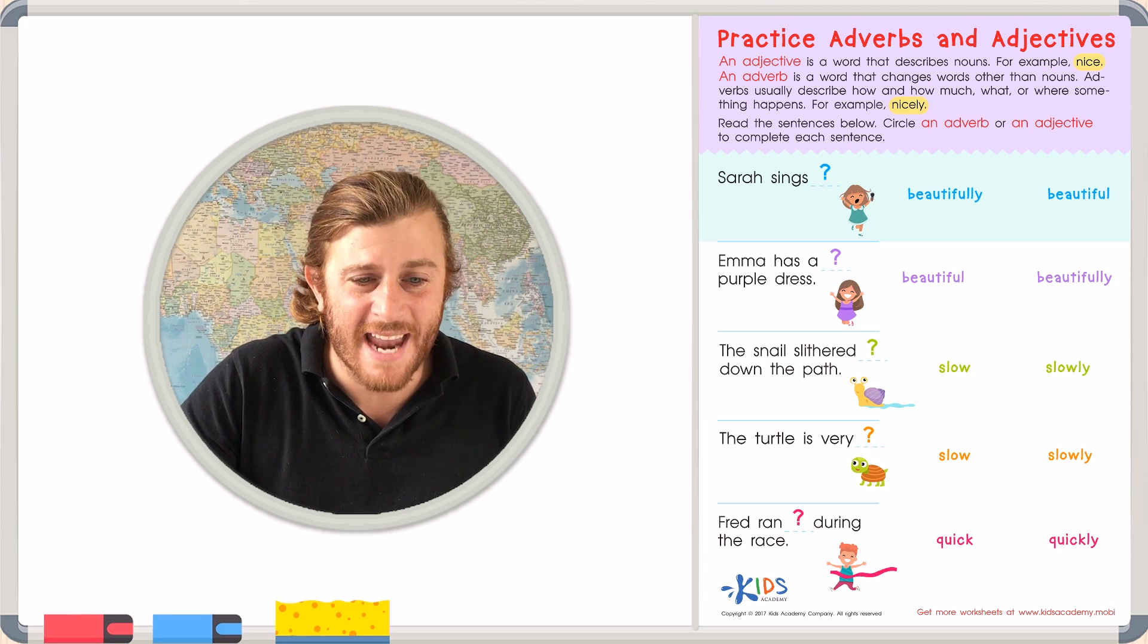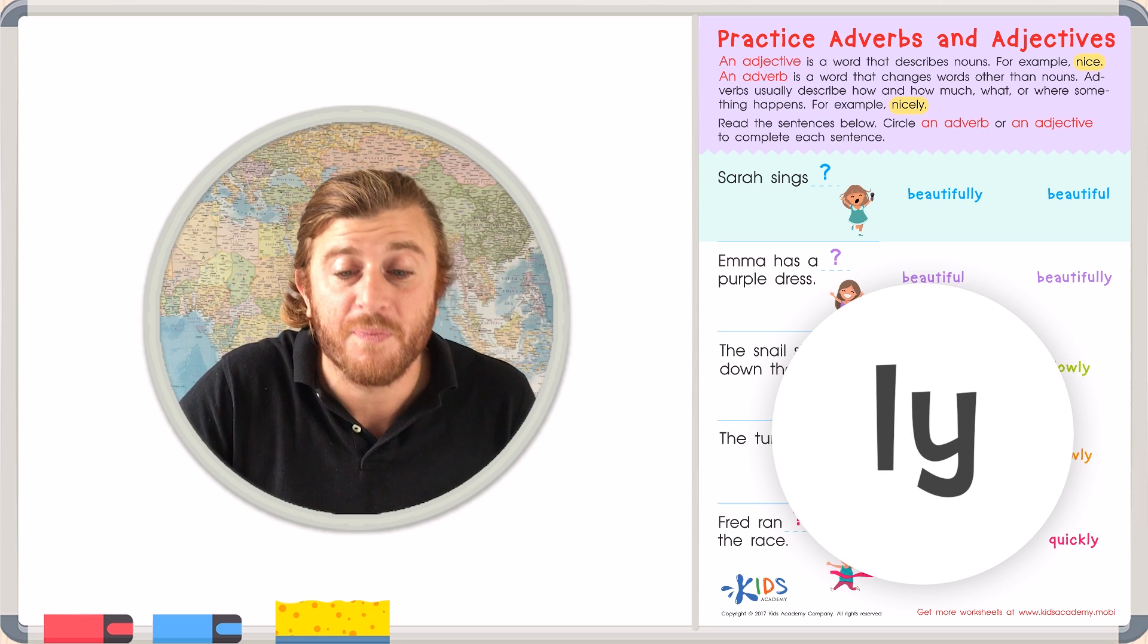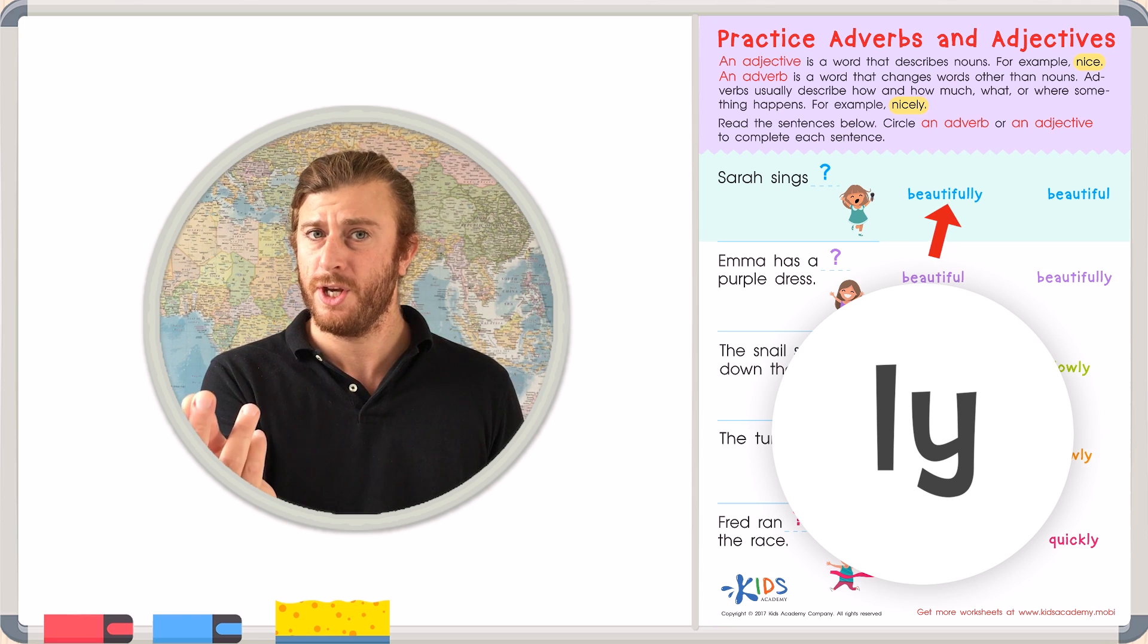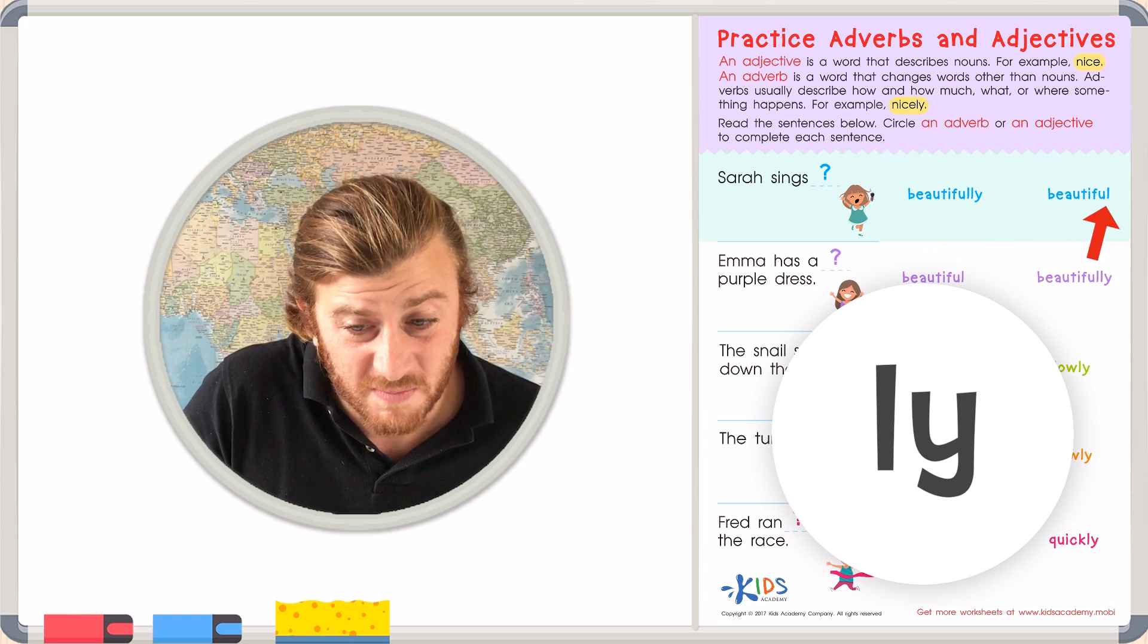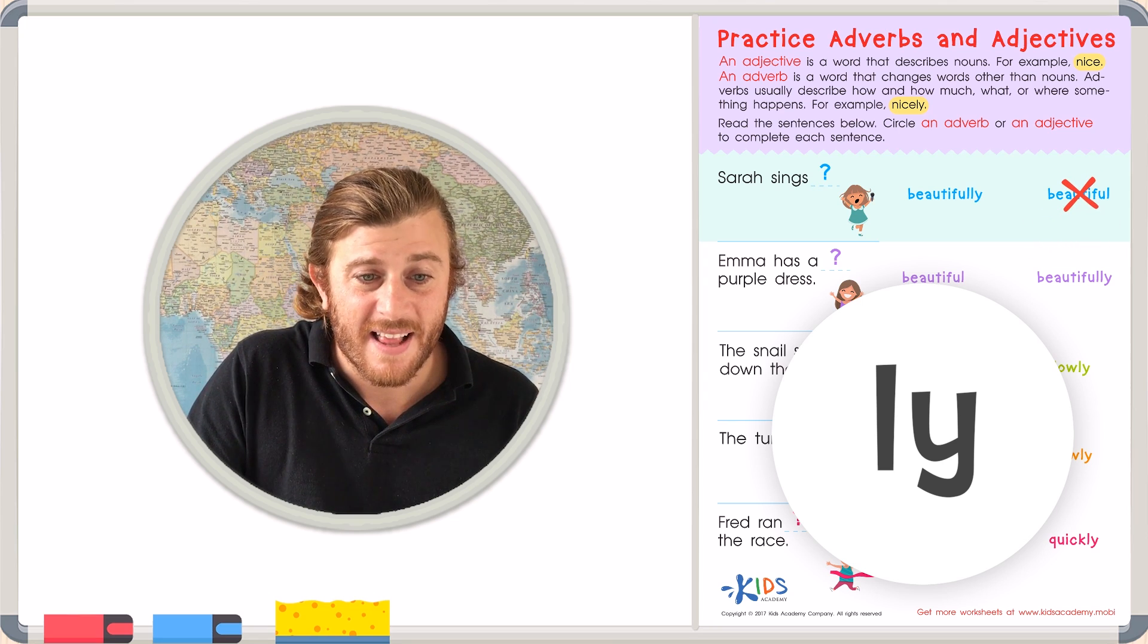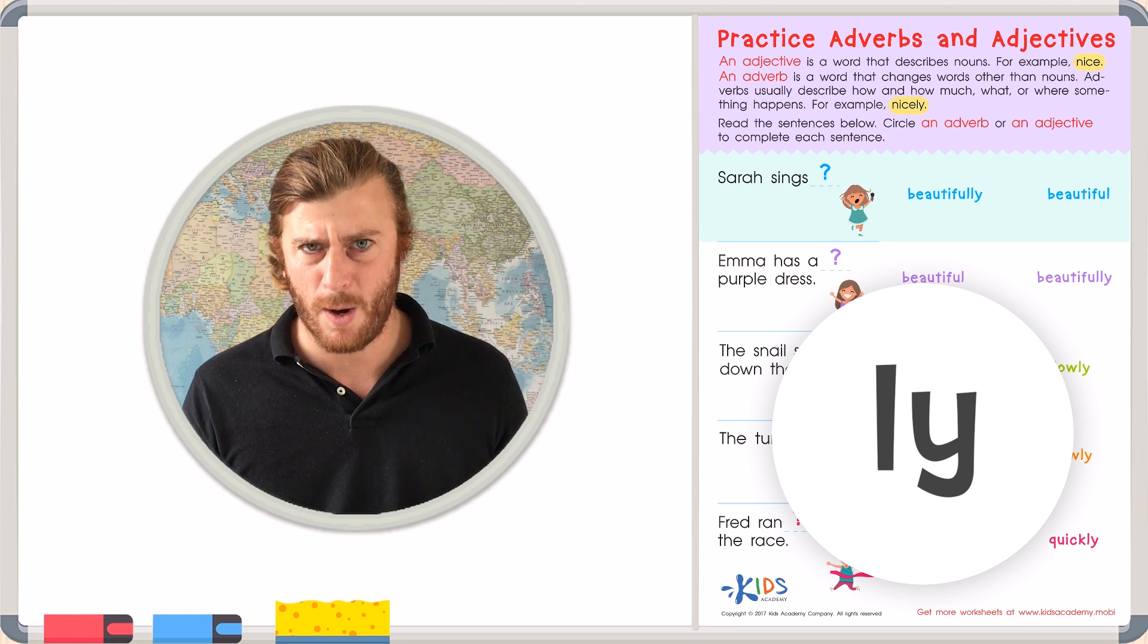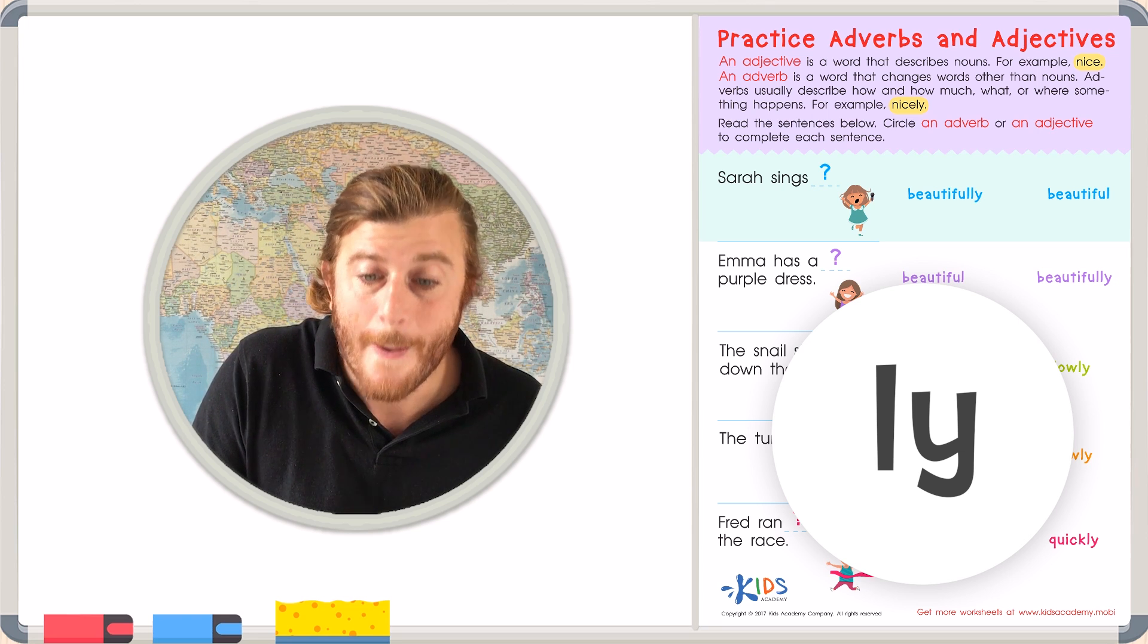Adverbs often end in the suffix ly. So, if I want to talk about how Sarah sings, I would say, Sarah sings beautifully. I wouldn't say, Sarah sings beautiful. That doesn't make sense. I could say that Sarah is beautiful. But that's not what this sentence is talking about. This sentence wants to know how Sarah sings. And in this case, Sarah sings beautifully.